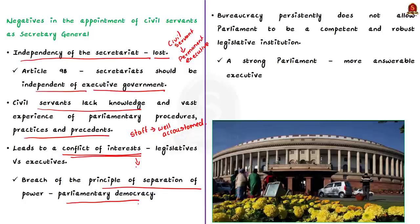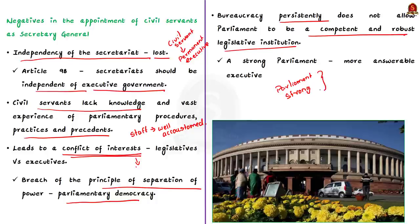Finally, there are many instances where bureaucrats persistently do not allow Parliament to be a competent and robust legislative institution, which may make Parliament a weak institution. Only if there is a strong Parliament can it ask necessary questions to the executive and hold it accountable. Appointment of a civil servant might weaken the position of Parliament and thereby make the executive also unaccountable. These four points are the cons in the appointment of a civil servant as Secretary General of a parliamentary house.